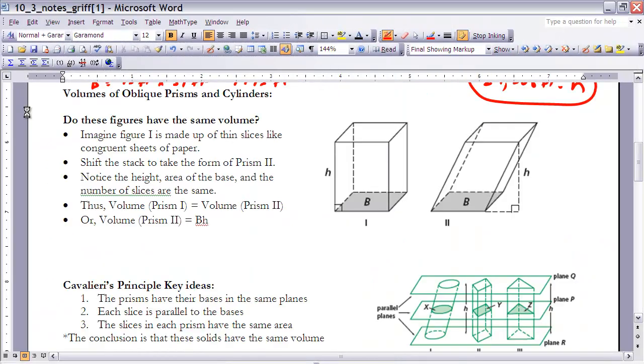All right, so we've established that if we look at a right cylinder or a right prism, that the volume is just whatever the area of the base is times the height. Well, what we want to do is we want to extend that beyond just right prisms and cylinders, actually to oblique ones as well. And if you imagine figure one here is made up of thin slices, like congruent sheets of paper.